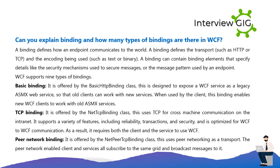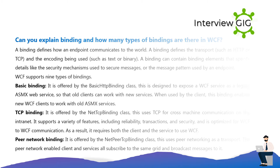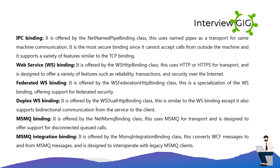Peer network binding is offered by the NetPeerTcpBinding class. It uses peer networking as a transport. The peer network-enabled client and service are all subscribed to the same grid and broadcast messages to it. IPC binding is offered by the NetNamedPipeBinding class. It uses named pipes as a transport for same-machine communication. It is the most secure binding since it cannot accept calls from outside the machine, and it supports a variety of features similar to the TCP binding.